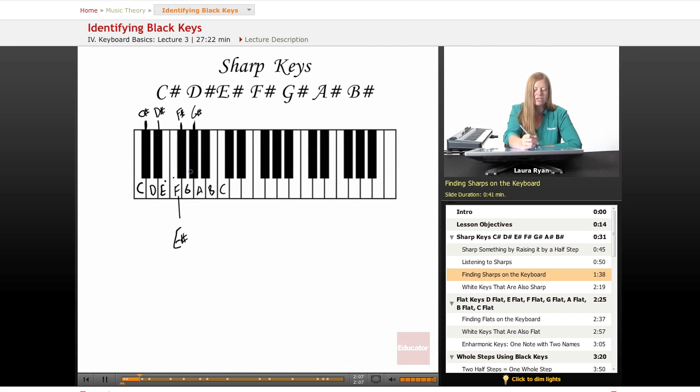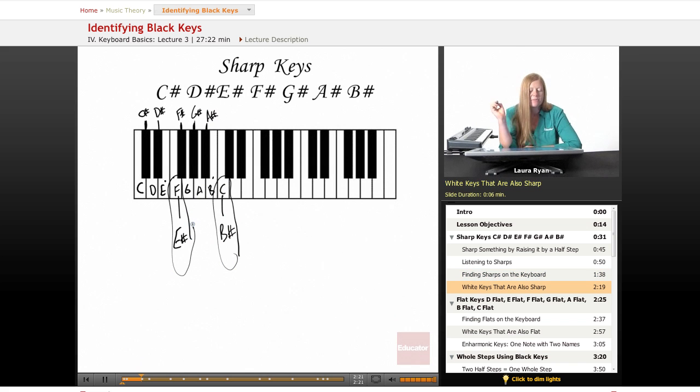This is G sharp, it's right above G. A sharp is right above A. B sharp, hmm, another white key sharp. So, in two instances, we have white keys that can be called a sharp.